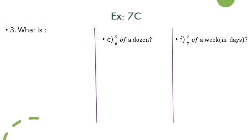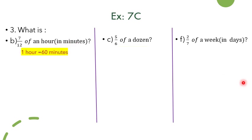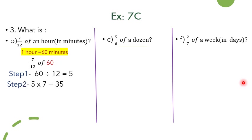This is the third question of exercise 7c. The first bit: find 7 by 12 of an hour. We need to find the number — 1 hour equals 60 minutes. So the question is to find 7 by 12 of 60. Step 1: divide 60 by 12; the quotient is 5 because 12 fives are 60. Step 2: multiply 5 by 7 giving 35. So 7 by 12 of an hour is 35 minutes.